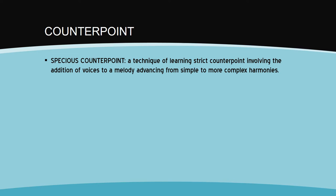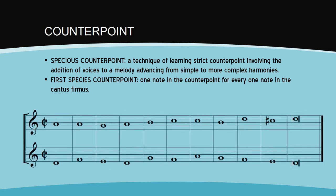There are five different species of counterpoint. First species is the simplest. It is a counterpoint in which there is one note in the counterpoint for each note in the cantus firmus. It is also known as simple or note against note counterpoint.